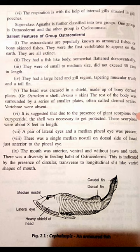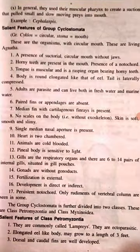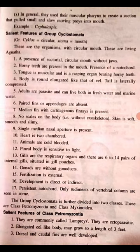The mouth was anterior, ventral, and without jaws and teeth. There was diversity in the feeding habits of Ostracodermi, indicated by the presence of circular, transverse, and longitudinal slit-like varied shapes of mouth. In general, they used their muscular pharynx to create suction that pulled small and slow-moving prey into the mouth.